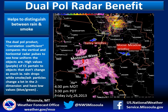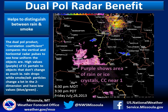What we're looking at here is the dual pole product, correlation coefficient or CC for short. The purple here is the rain, or high CC values, while the blue-green colors is the smoke from the wildfires — low CC values. CC compares the vertical and horizontal radar pulses to see how uniform the objects are. High values of CC pertain to objects that don't change as much, like raindrops, shown in purple. Low values of CC are objects that change a lot between radar scans, which could be smoke, shown in blue and green.